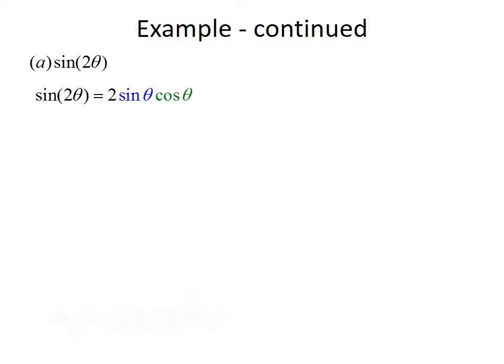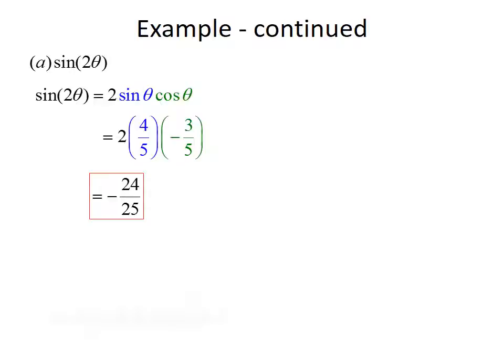Now that we know both sine and cosine, let's find the sine of 2 theta. Using the double angle formula, sine of 2 theta equals 2 times sine of theta times cosine of theta. Plugging in our values, that gives us 2 times 4 fifths times negative 3 fifths, which equals negative 24 over 25.